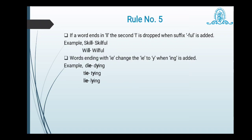Rule number five. If a word ends in double L, the second L is dropped when suffix full is added. For example, skill, skillful. So when any word ends with double L and if we have to make the addition of suffix F-U-L, then we have to skip one L and instead of that we have to use full. Willful. So willful, single L. Words ending with I-E change the I-E to Y when I-N-G is added. For example, die, dying. I-E is dropped. Instead of that Y is used and I-N-G is attached. Tie, tying. T-Y-I-N-G. Lie, lying. L-Y-I-N-G. So this is rule number five.